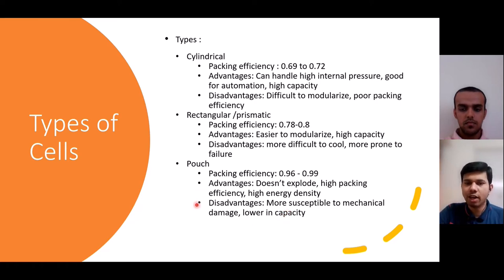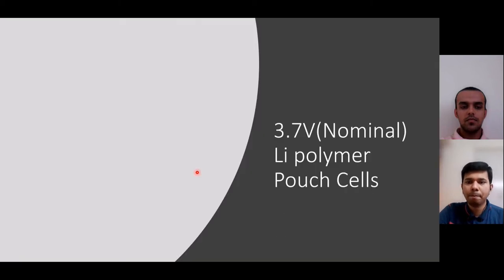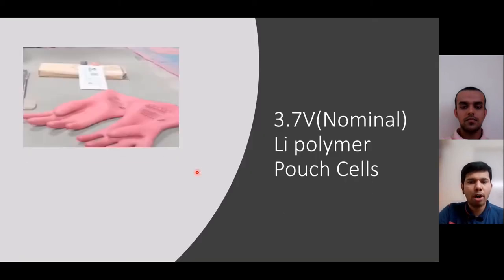Based on these advantages and disadvantages, these types of cells found applications in different products. Pouch cells are found in high energy density requirements like that of a racing car.